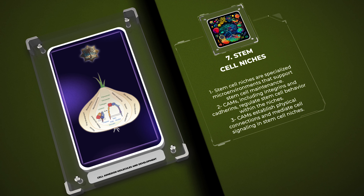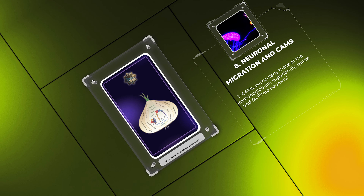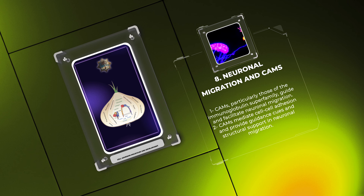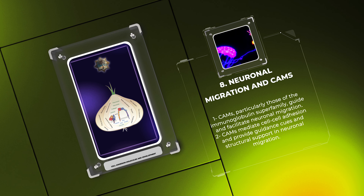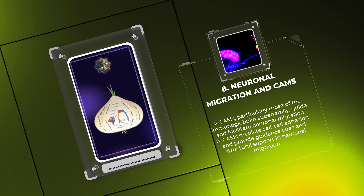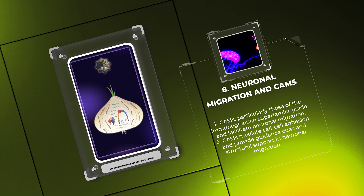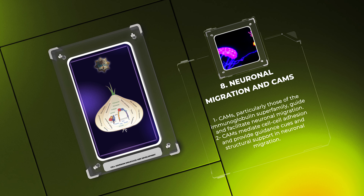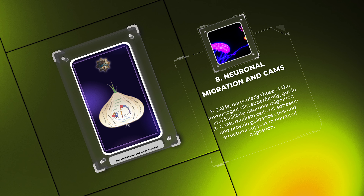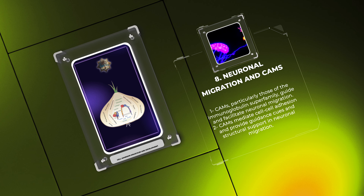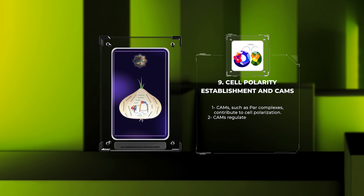During brain development, neurons migrate from their birthplace to their final destination, forming the intricate neural circuits that underlie brain function. CAMs, particularly those of the immunoglobulin superfamily, guide and facilitate neuronal migration. CAMs mediate cell-cell adhesion between migrating neurons and radial glial cells or other neurons, providing guidance cues and structural support in this highly orchestrated process.